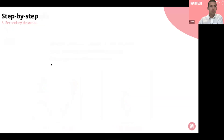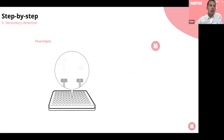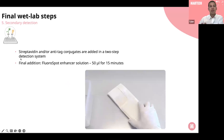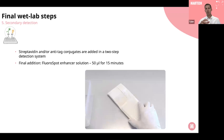After adding the detection antibodies, in a two-step system you then add the fluorophore-labeled secondary detection reagents — streptavidin or anti-tag conjugates. After that incubation period, remove those reagents and add the FluoroSpot enhancer solution — 50 microliters for 15 minutes — which really helps enhance the fluorescent signal. An important step: make sure to get all of the enhancer solution out. Do a hard decant into your waste bin, then hit the plate upside down against a stack of paper towels until you stop seeing droplets. Any remaining enhancer solution in the wells can negatively affect the data.